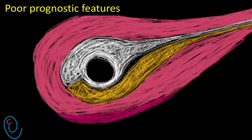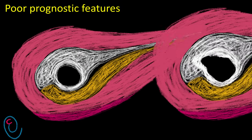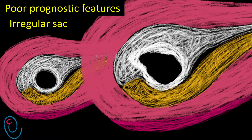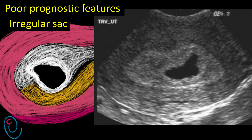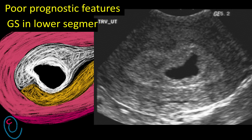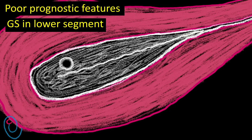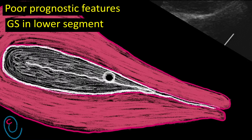A normal gestational sac is rounded or oval in shape. An irregular sac is a suspicious feature and is associated with an increased risk of pregnancy loss, requiring more frequent observations. Also, a normal gestational sac is fundal in location or present in the mid-uterine segment. A gestational sac in the lower uterine segment is a poor prognostic feature.